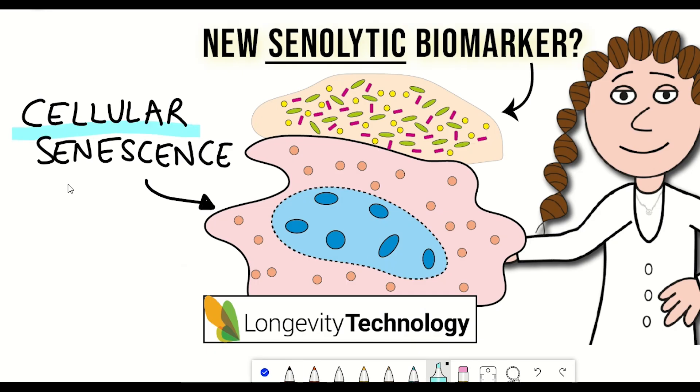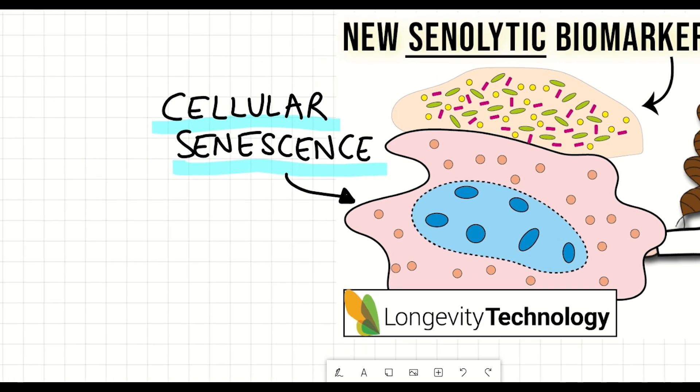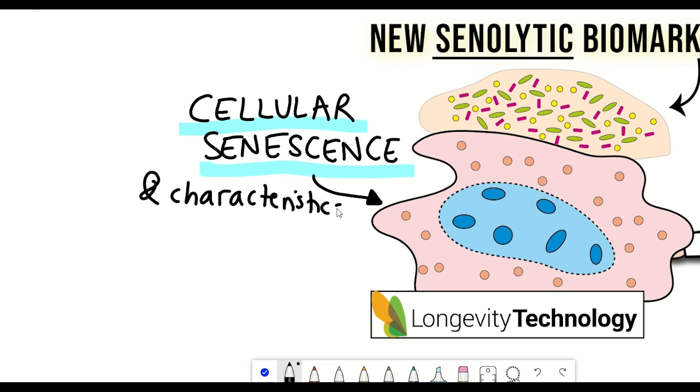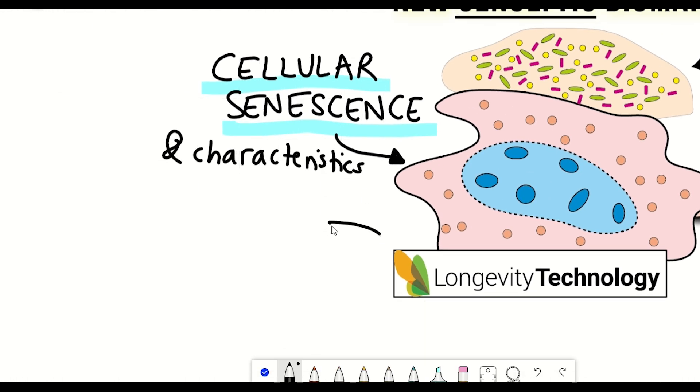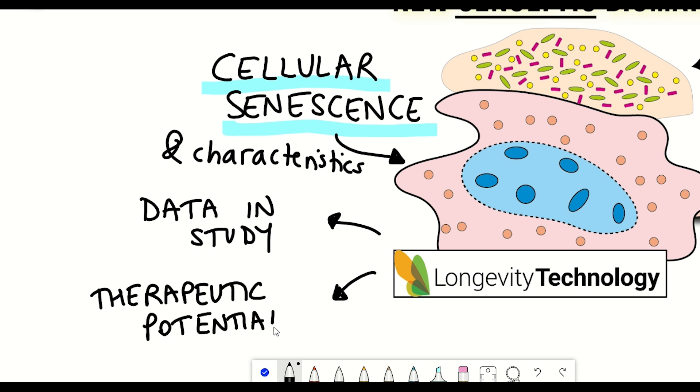So in this video, I'll begin by giving an overview of what senescent cells are and ways in which senescent cells can be identified. We'll then take a look at some of the data in this paper and some of the oxylipins that they've discovered to be involved in the senescence process. We'll then evaluate how this information could have potential therapeutic value.